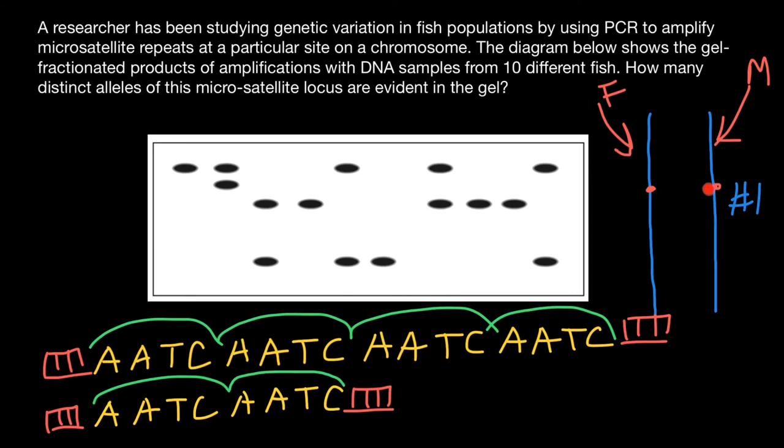When we apply a current to the gel, all these molecules are loaded on one side. Let's say here we have negative charge and positive charge here. DNA molecules are slightly negatively charged and will move toward the positive charge, separating according to their size. Smaller molecules travel a greater distance, while bigger molecules travel a shorter distance through the gel matrix.